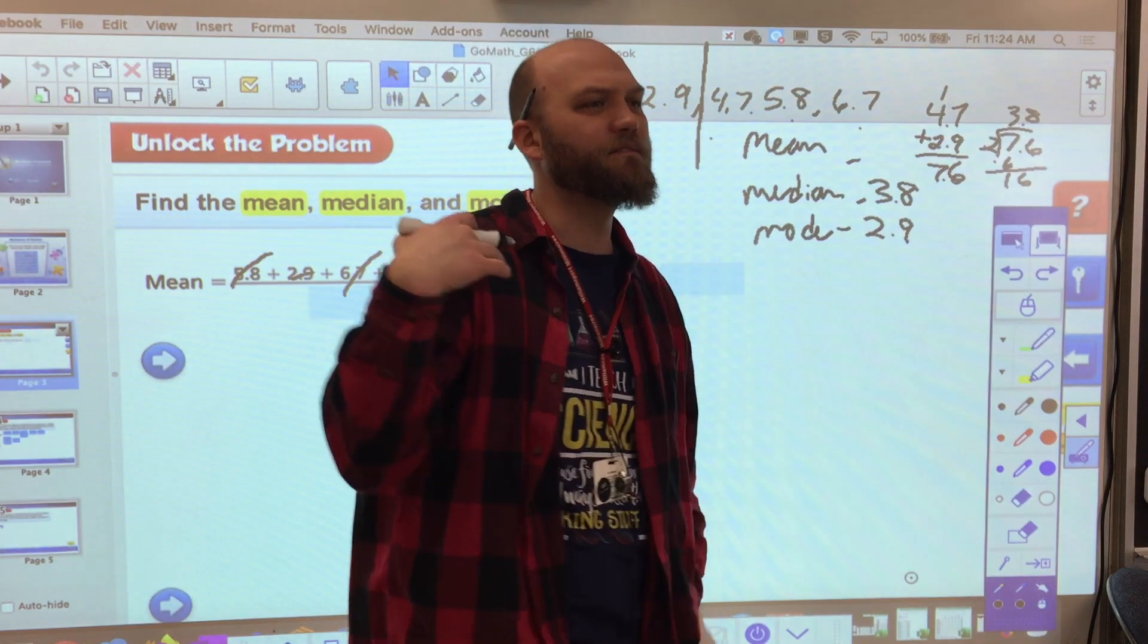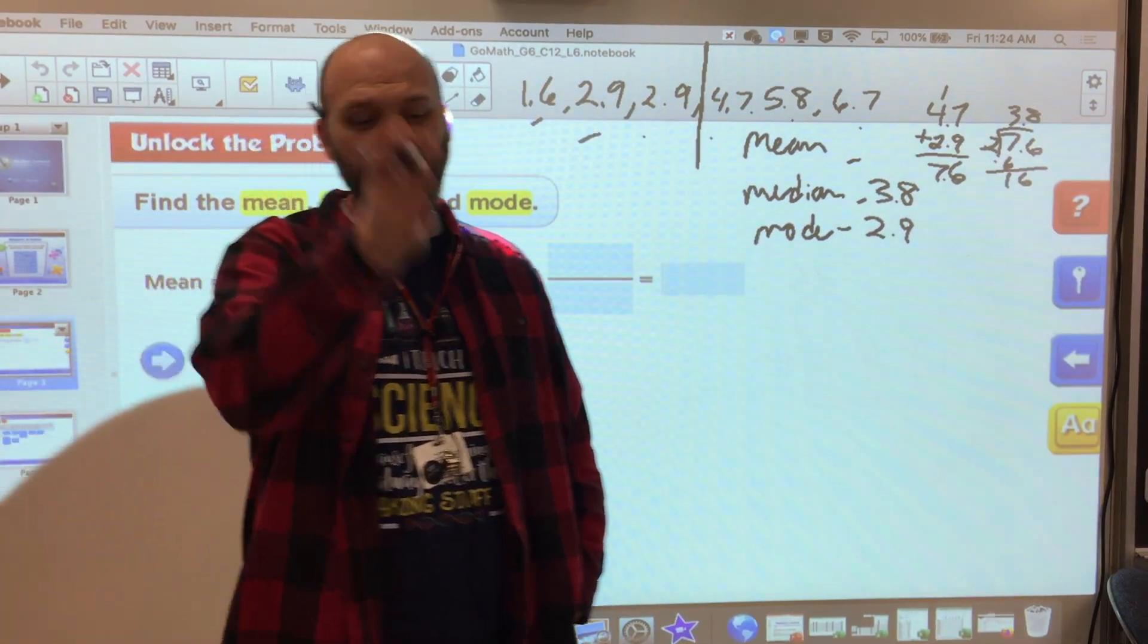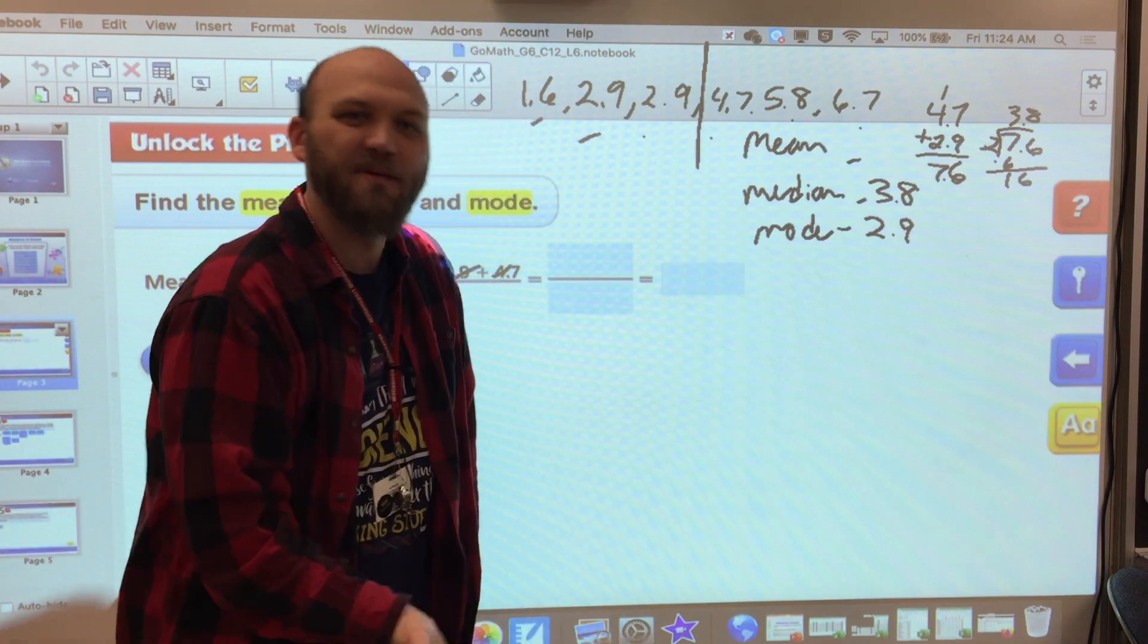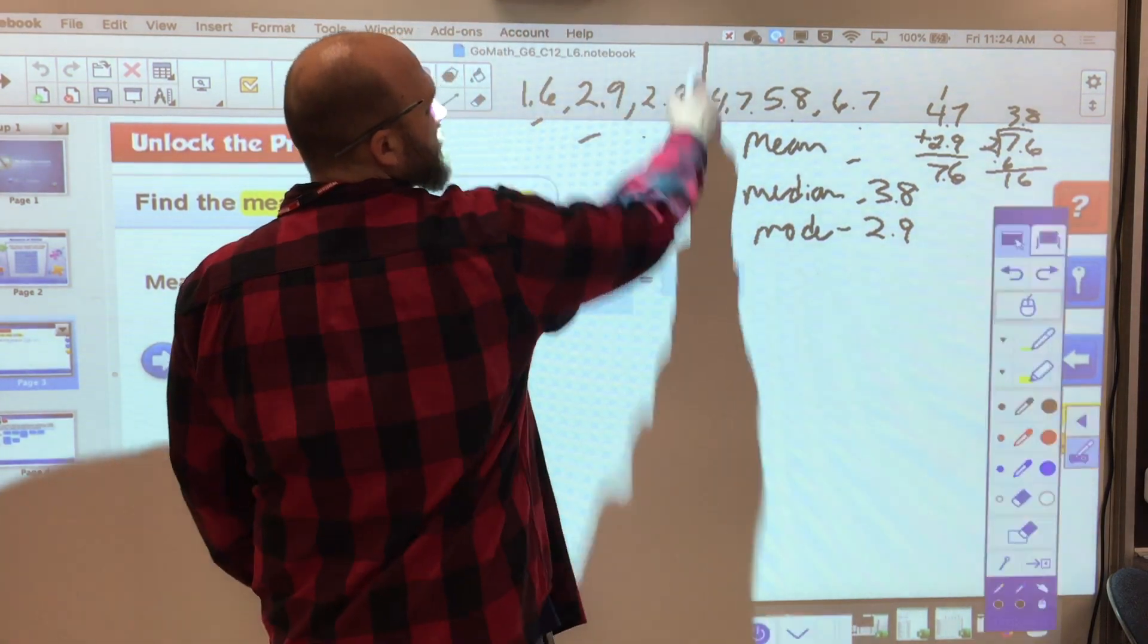So if, for example, I have 1, 2, 2, and 4, my middle number is between 2 and 2. So obviously my median would be 2. That's not going to change anything. Look for that middle number.